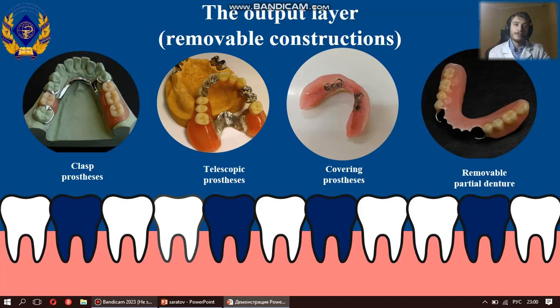There are currently 19 structures in the output layer: nine are removable and ten are fixed structures.